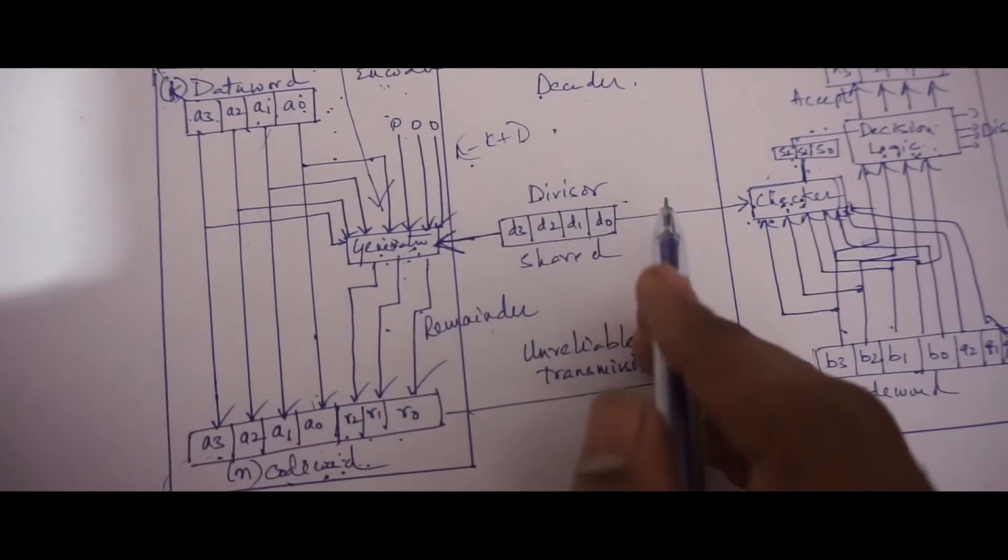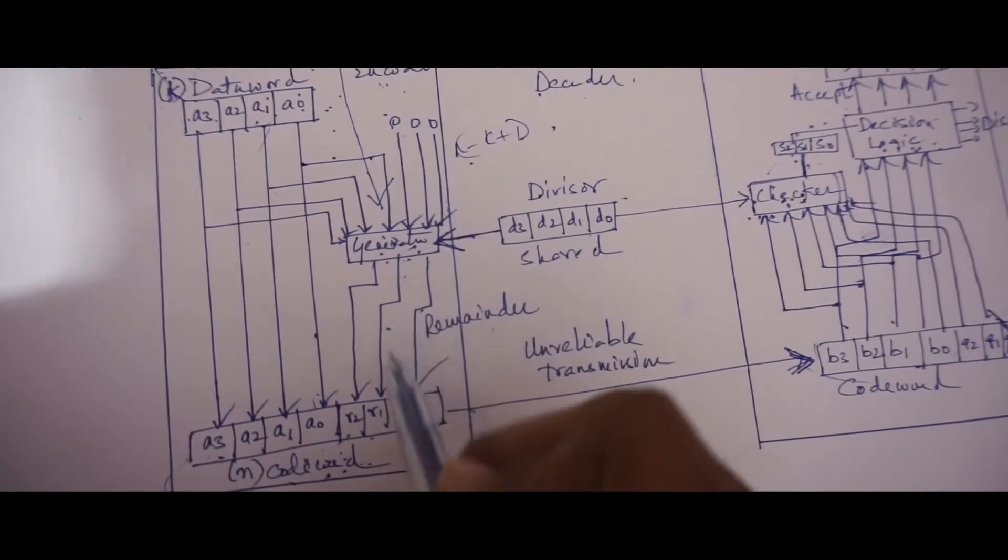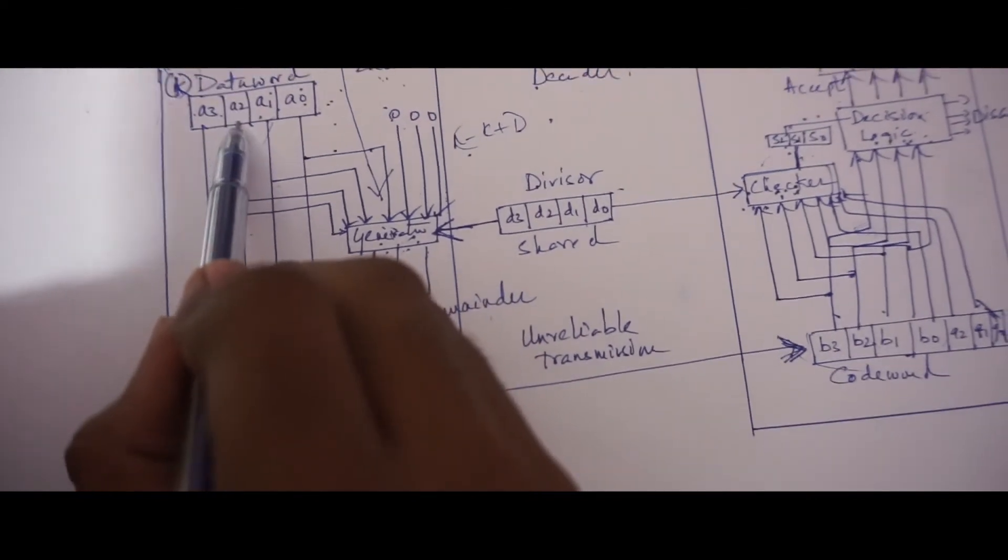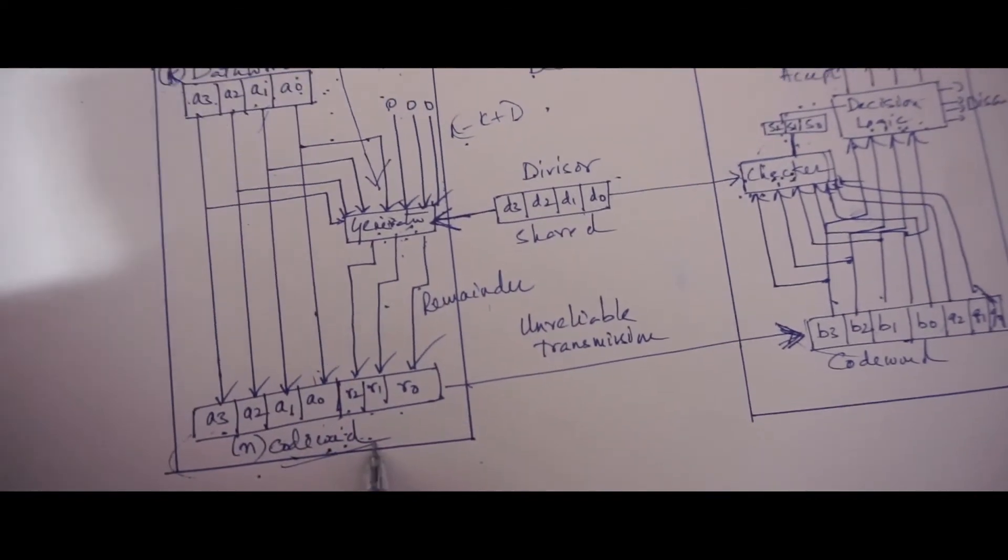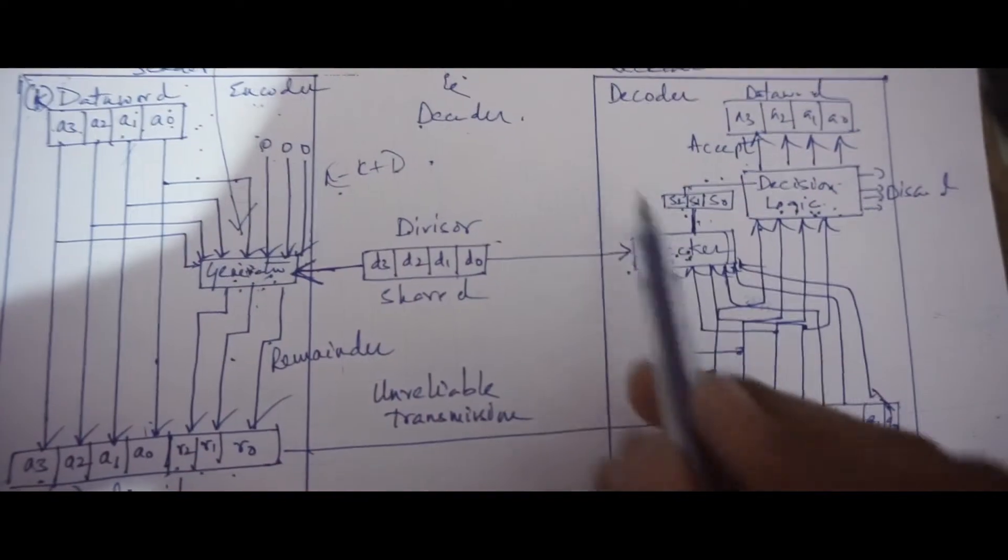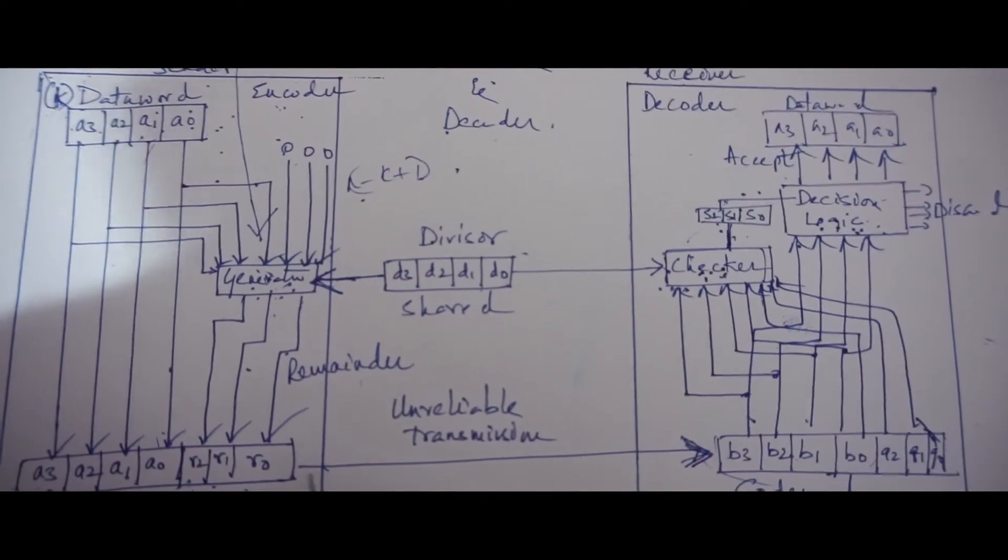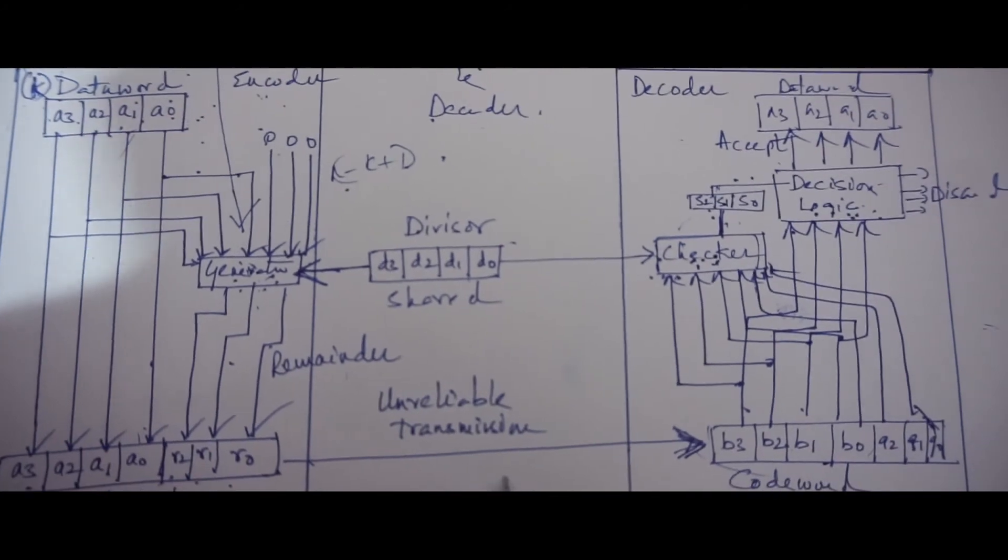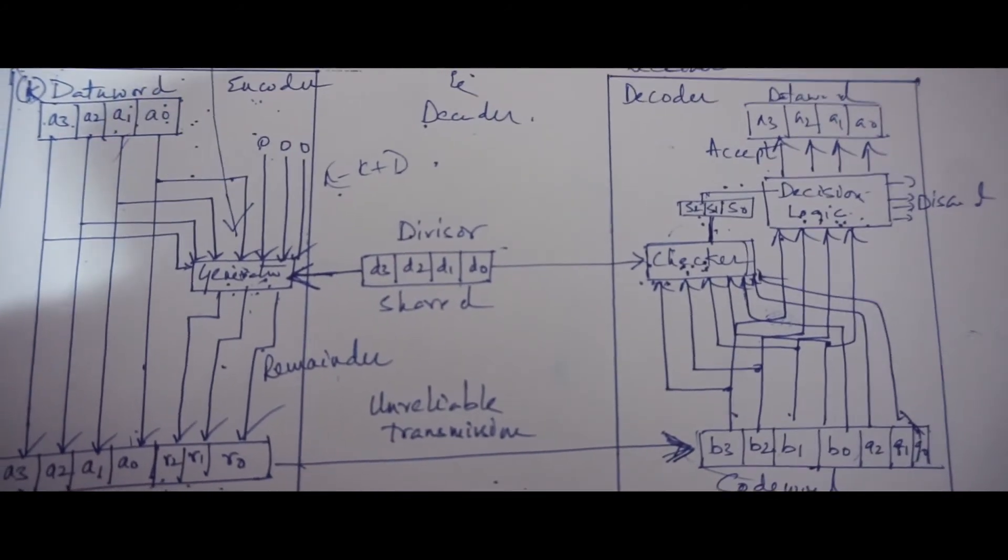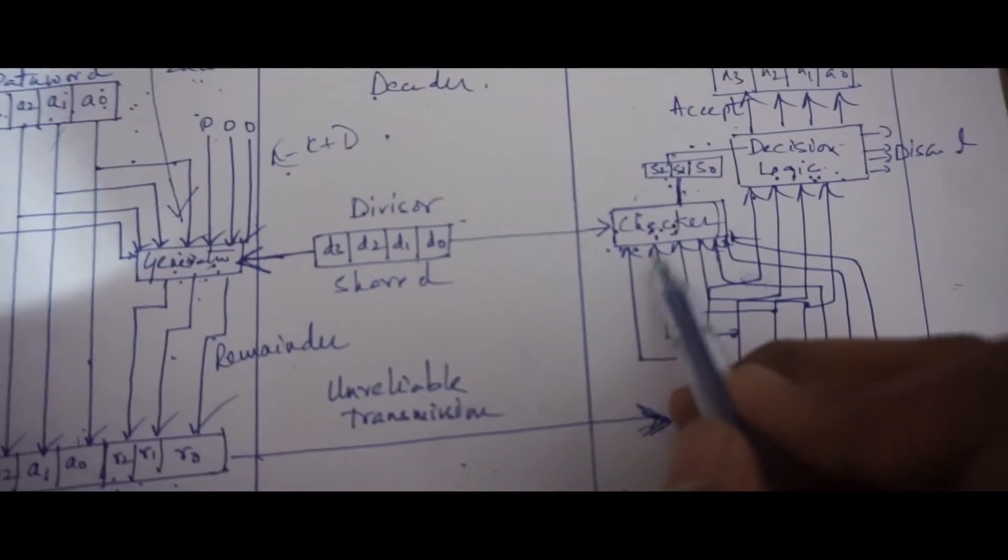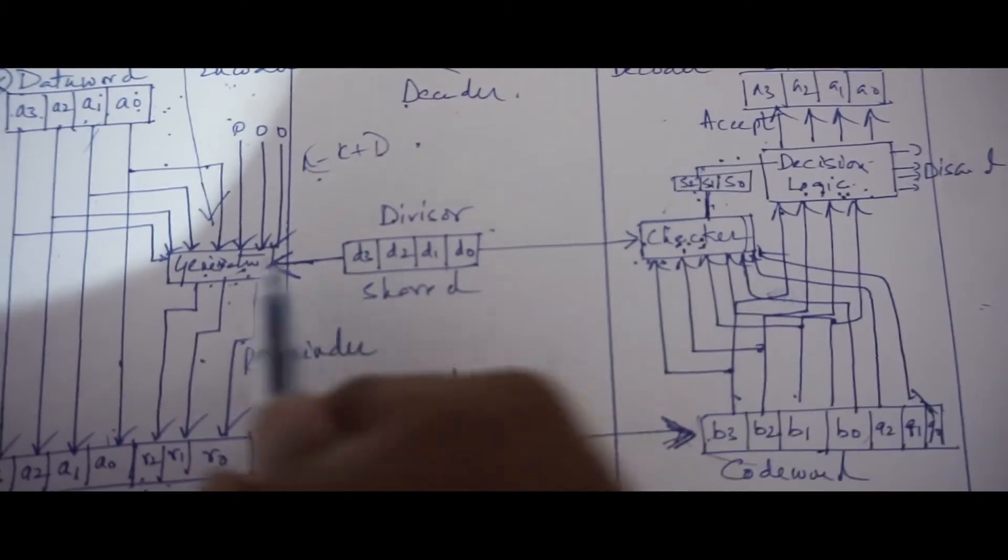The quotient of the division is discarded and the reminder r2, r1, r0 is appended to the data word to create the code word. On the decoder side, the decoder receives the code word which is possibly corrupted in the transition. A copy of all the n bits is then fed to the checker, which is a replica of the generator.